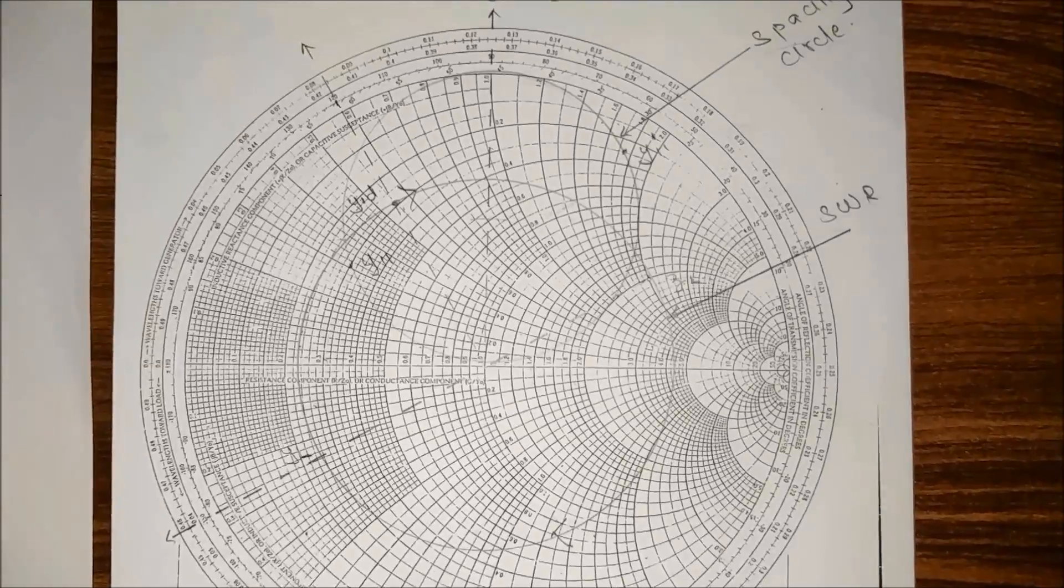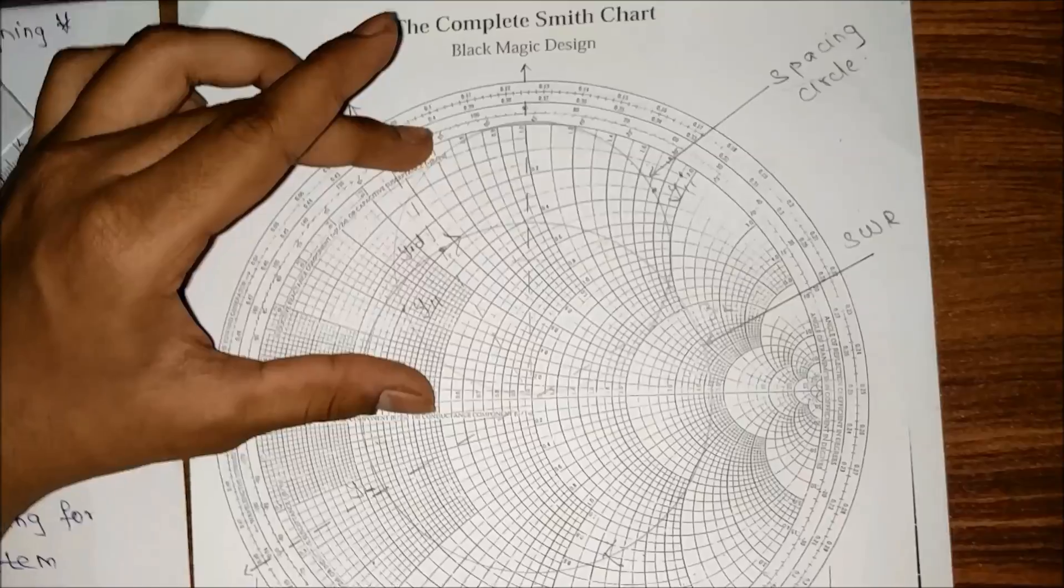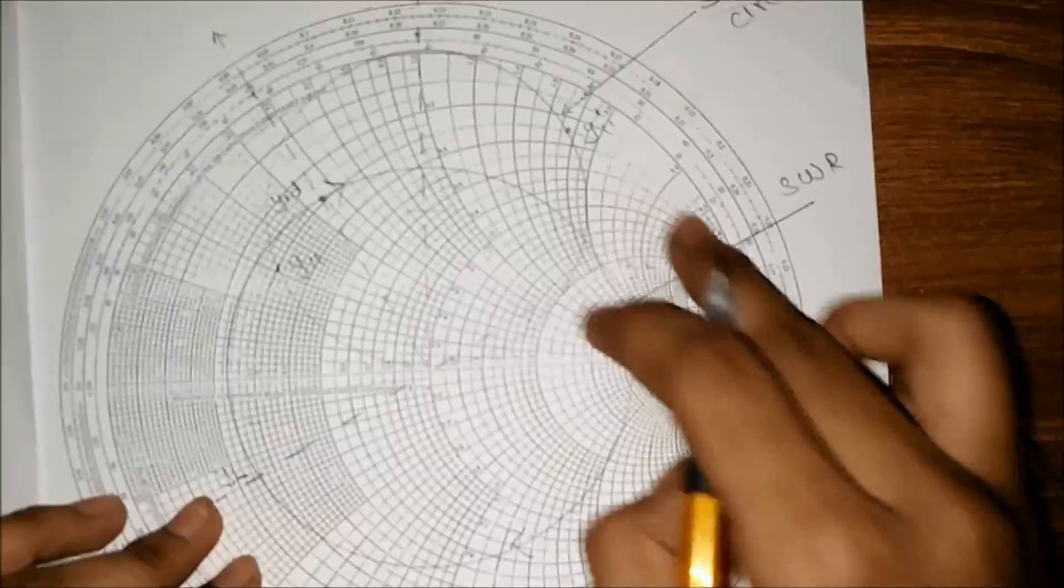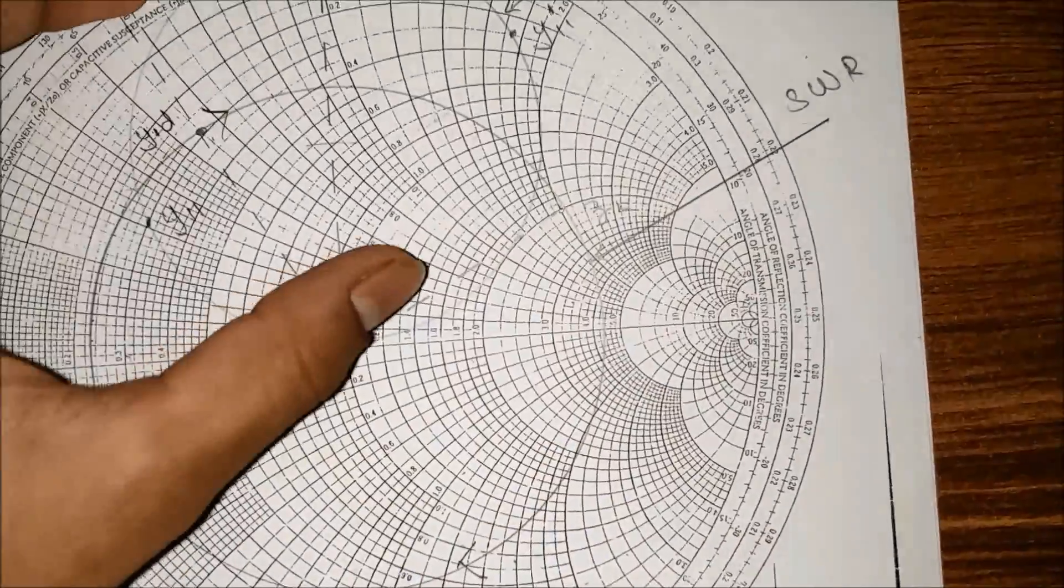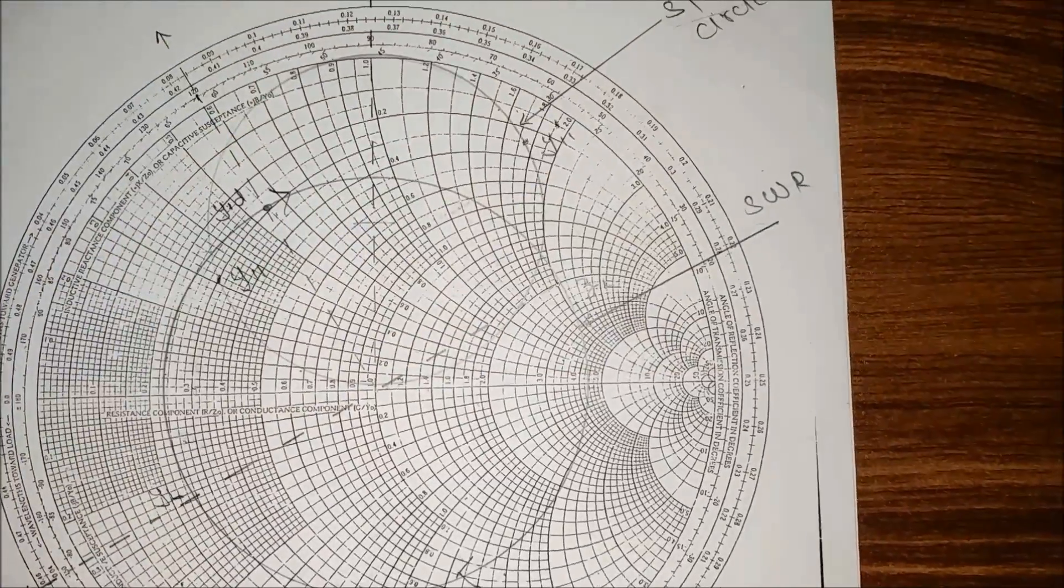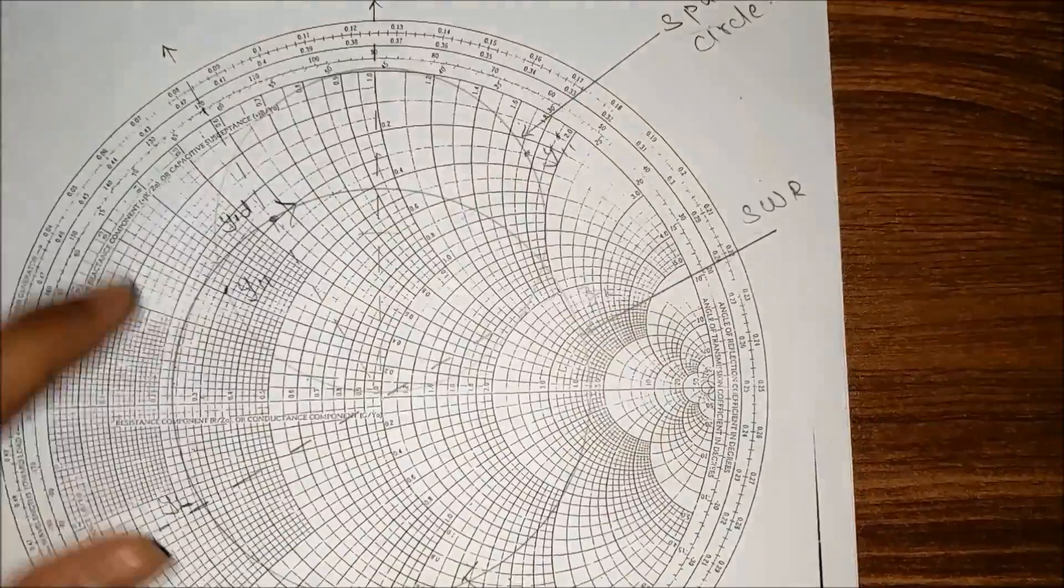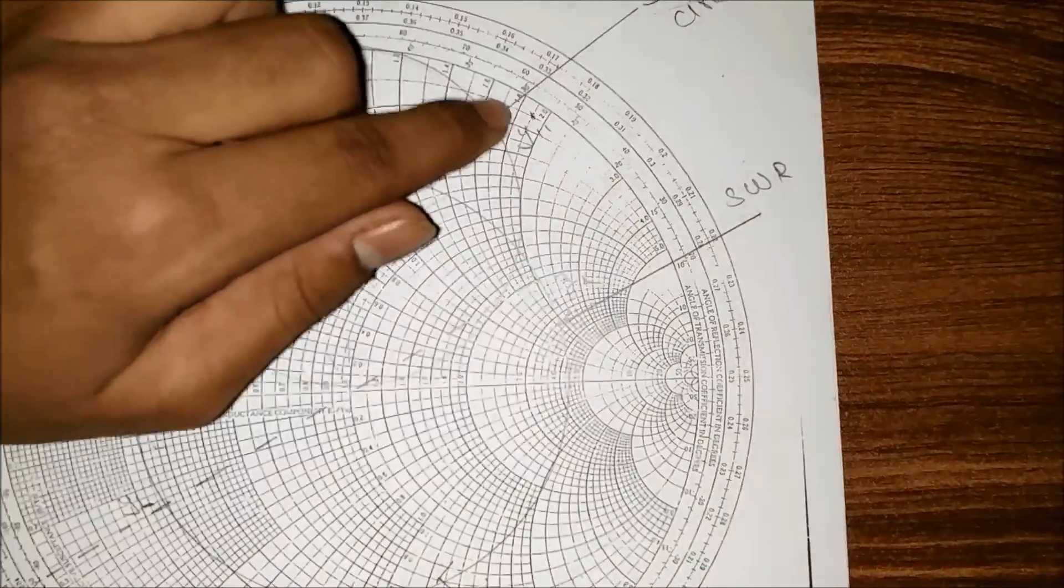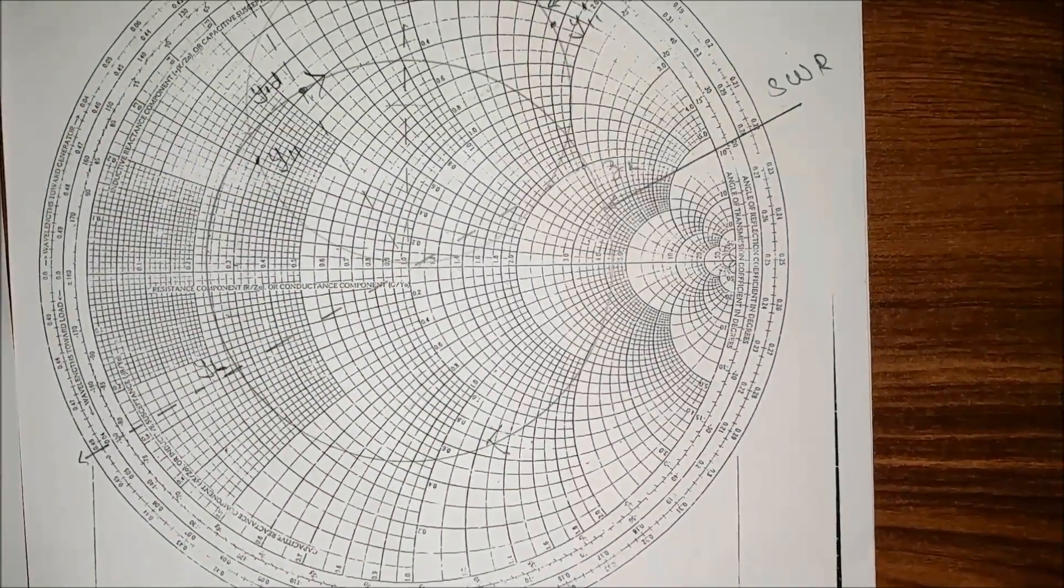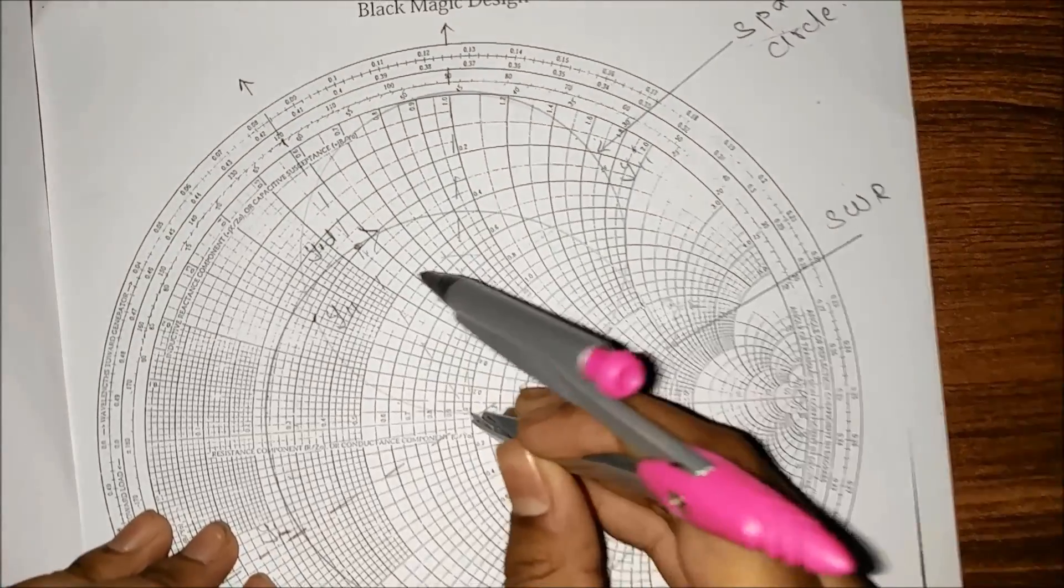Now the spacing circle is over here. All the mapping is done in the z equals 1 circle. We have to move this spacing circle to get the perfect matching. When we move the circle this way, the point over here will come somewhere over here and the point over here will come somewhere over here. Keep the compass at the center.